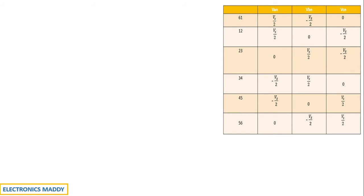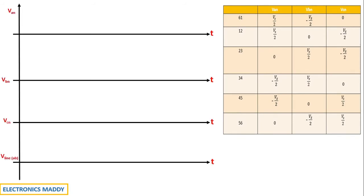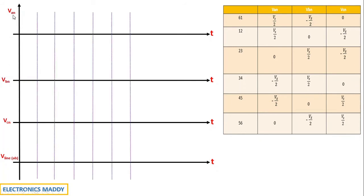We'll keep the table as a reference to plot the waveforms for Van, Vbn, Vcn, and the line voltage Vab. Draw six reference lines so that we have equal conduction duration intervals — each interval corresponds to 60 degrees, giving a total duration of 360 degrees.